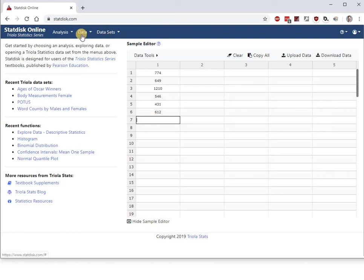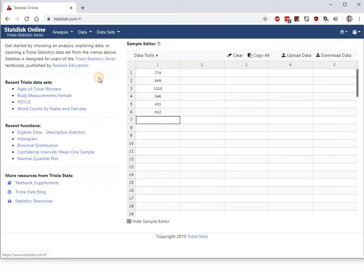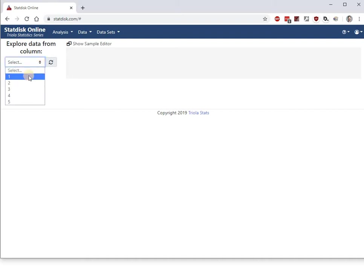And up here at the top there's analysis, data, data sets. So we want under data. What we're heading for right now is explore the data. We need some descriptive statistics. So go ahead and click on that. And it is going to give you a bunch of results. Oh sorry. First of all we need to select the column. That's not smart enough to know we only type things into one column. But we did and it was the first one. So select that first column and then hit evaluate.